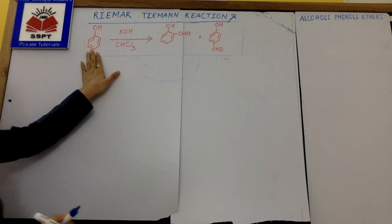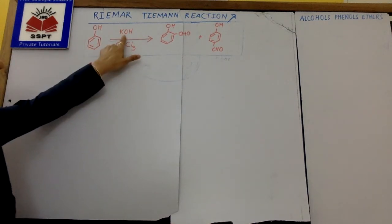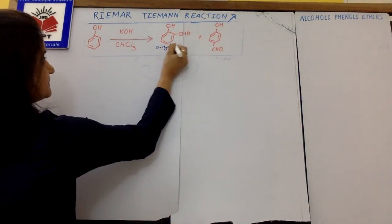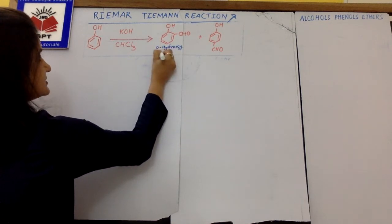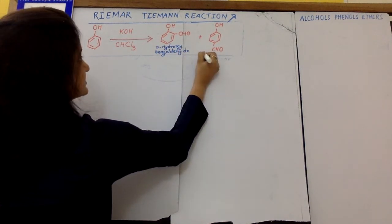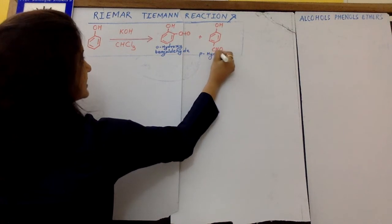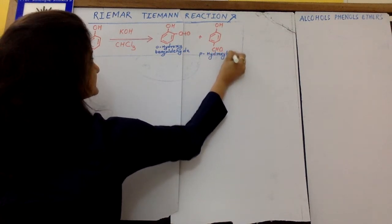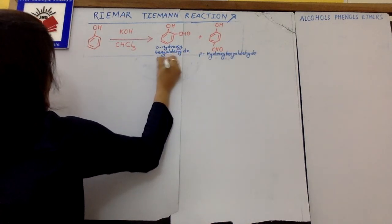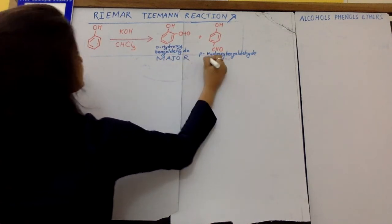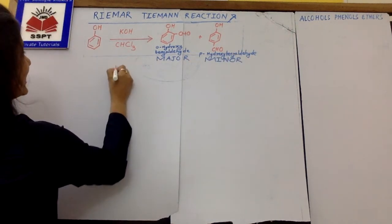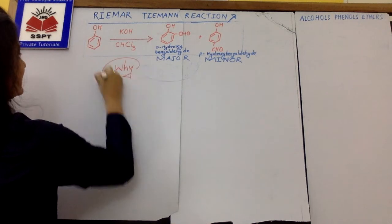So when we treat phenol with chloroform in an alkaline medium, we are getting orthohydroxy benzaldehyde, and we are also getting along with that, parahydroxy benzaldehyde molecules. Now, all you should know is this is major and this is the minor product. Why? Let us see.